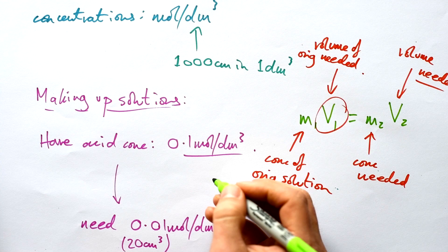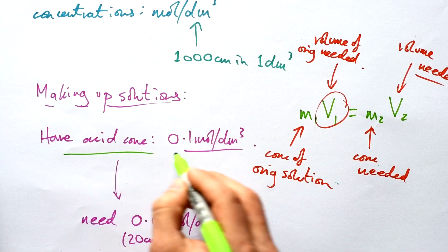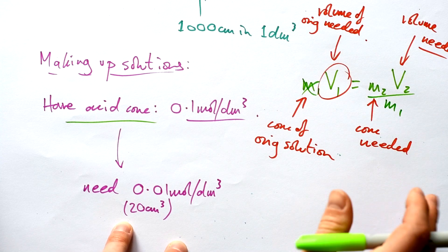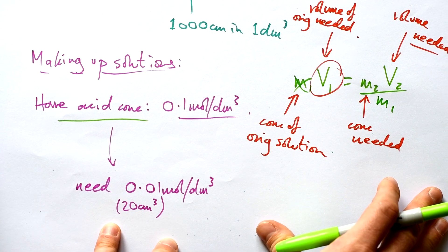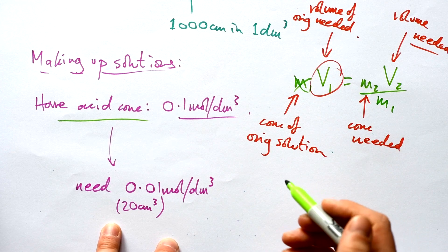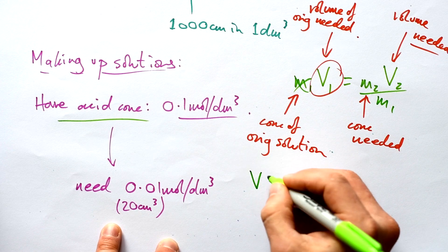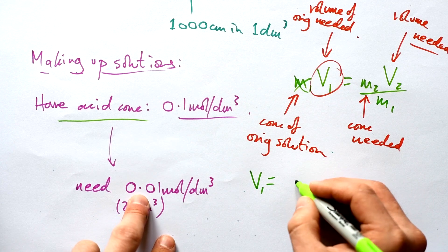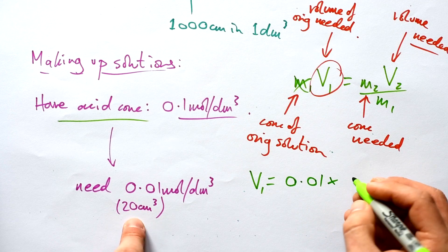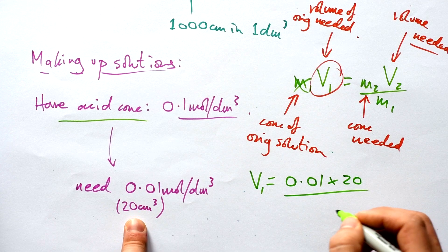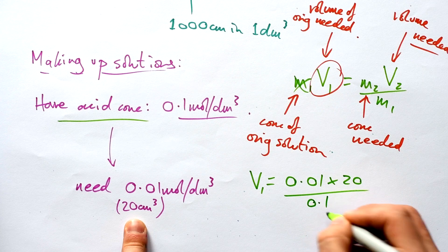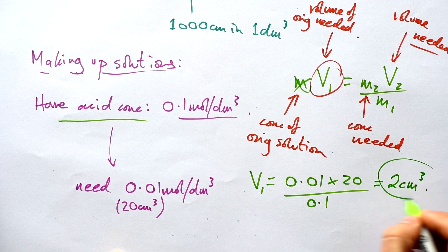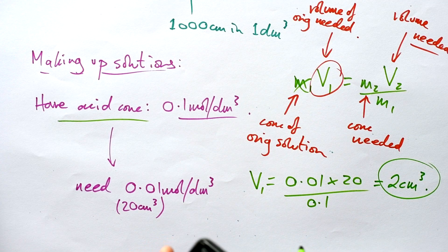All we have to do is rearrange to find how many cm³ we need of our original acid. Taking M1 to the other side: V1 = (M2 × V2) / M1. So the volume of original solution needed is 0.01 × 20 ÷ 0.1, which gives us 2 cm³ of our original 0.1 molar acid.